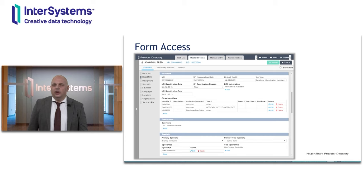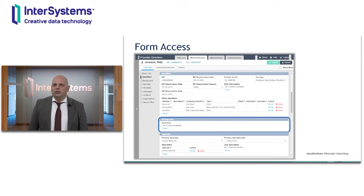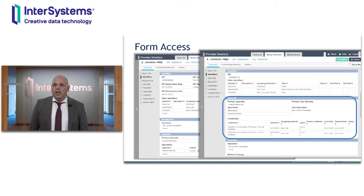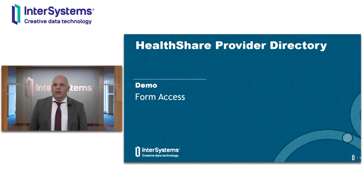If we look at this provider record for Fred Johnson in edit mode, without the business role applied, we can see the full attributes for identifiers with the ability to add and edit. The same is true for background and the specialty section. If we look at the same provider record with the business team role applied, the user now only has view access to identifiers and is restricted from viewing some identifier fields. They only have view access for specialty information, and are unable to view any information for background and sanctions. They do have view and edit capability for the education section. A closing note on Form Access is that it works with the Provider Directory extensible data model and overview form customizations, so if you add new fields to the directory you can use Form Access to manage permissions for your changes.